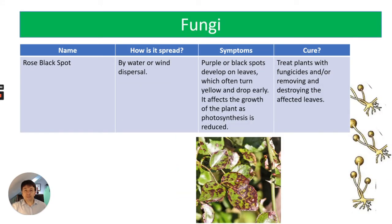Rose black spot is a fungal disease found on plants, spread by water or wind dispersal of spores. It causes purple or black spots on the leaves, which often turn yellow and drop early, reducing photosynthesis and therefore growth. You can treat plants with a fungicide or remove and destroy the affected leaves.